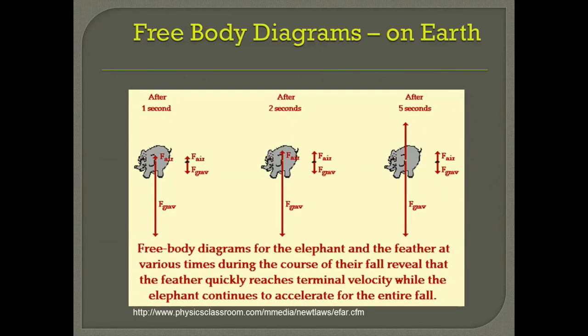But the feather's air resistance increases quickly, and soon it's equal to the force of gravity. When the air resistance and the force of gravity are equal, it can't accelerate. This is why the elephant would hit the ground first if you were free falling with air resistance.